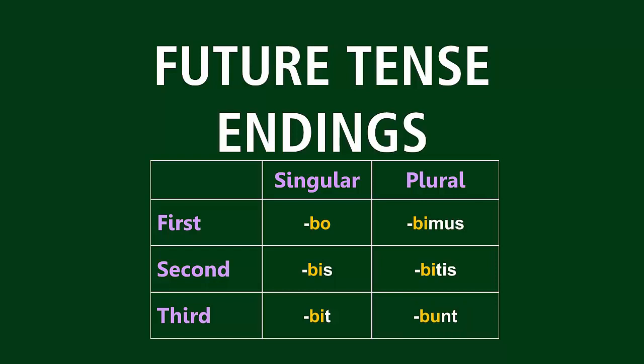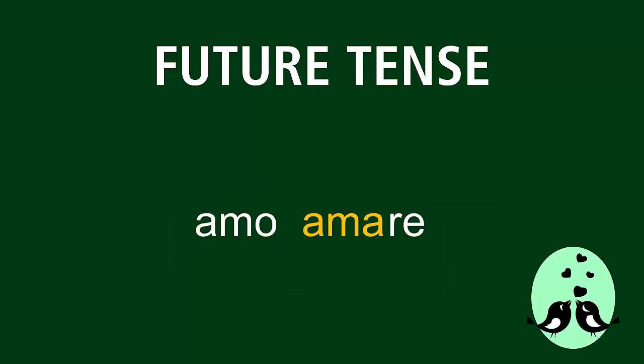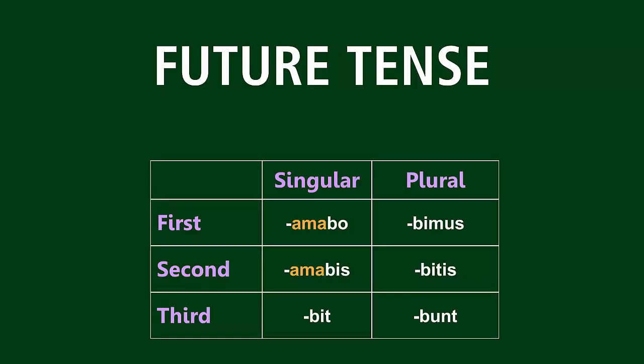Let's try an example and conjugate amo, amare in the future tense. We go to the second principal part and drop the RE to get our stem. And that means we end up with: amabo, amabis, amabit, amabimus, amabitis, amabunt.